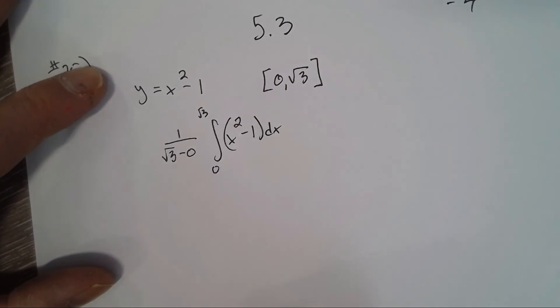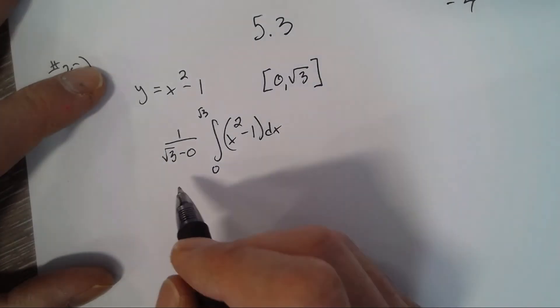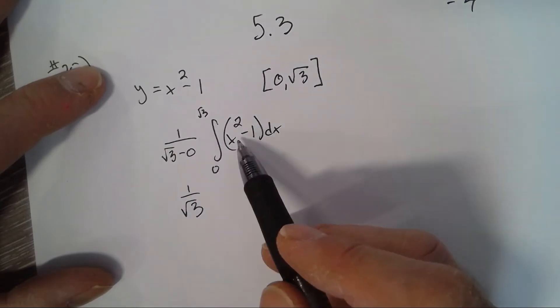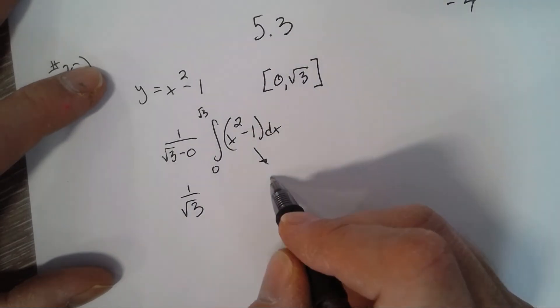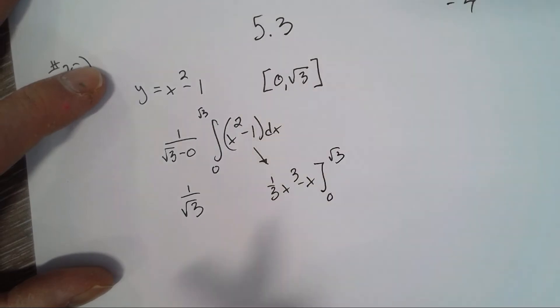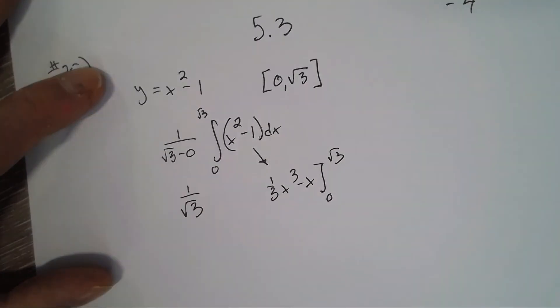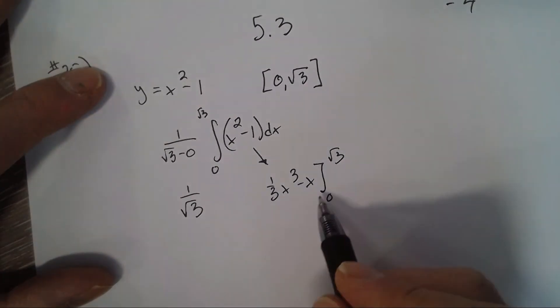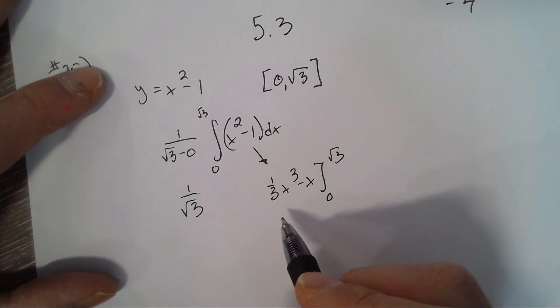So it's 1 over square root of 3. The anti-derivative will be 1/3 x cubed minus x, from 0 to the square root of 3. So square root of 3 cubed, that would be 1/3 x...